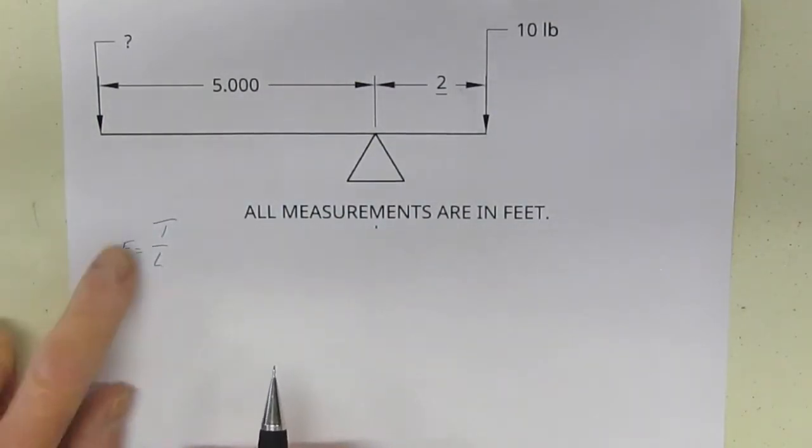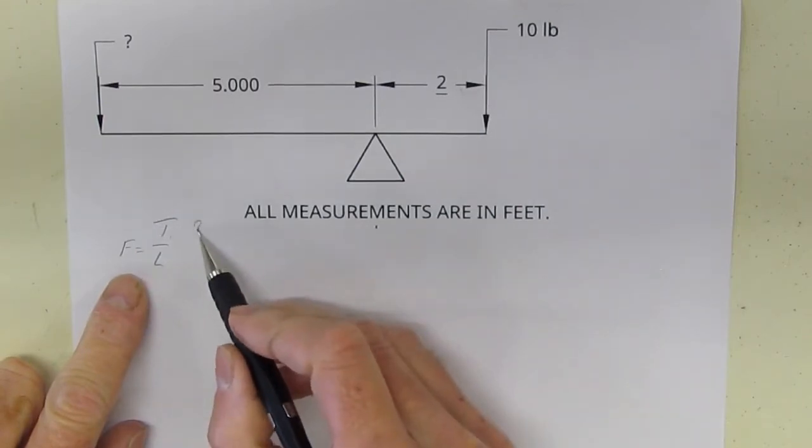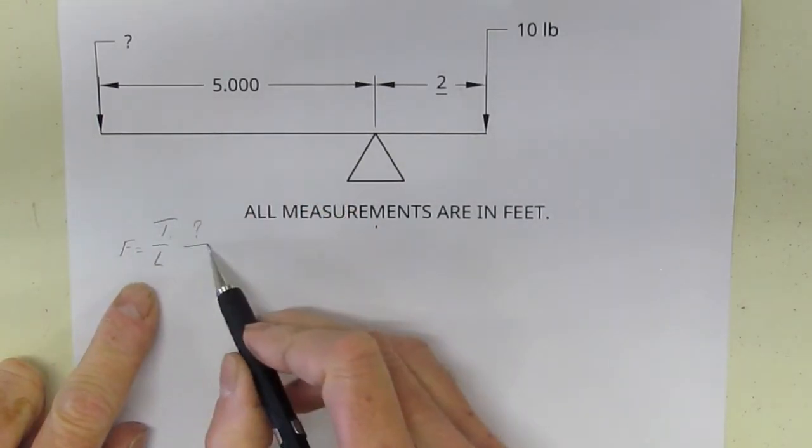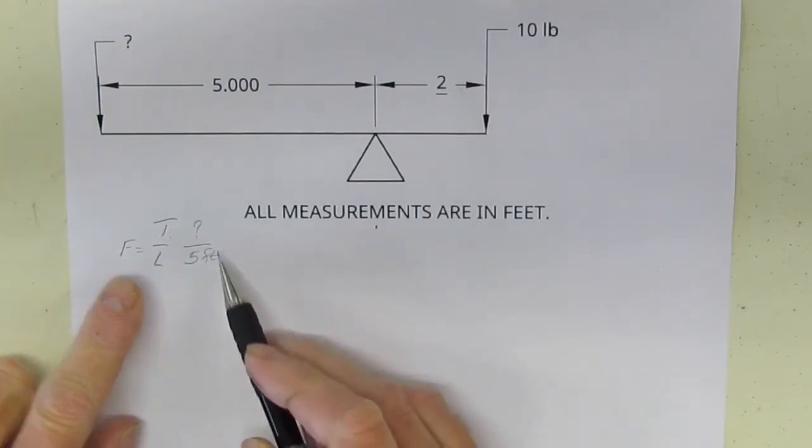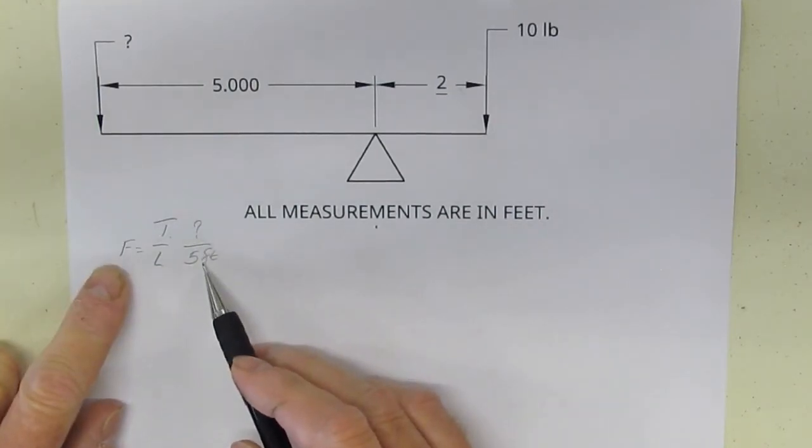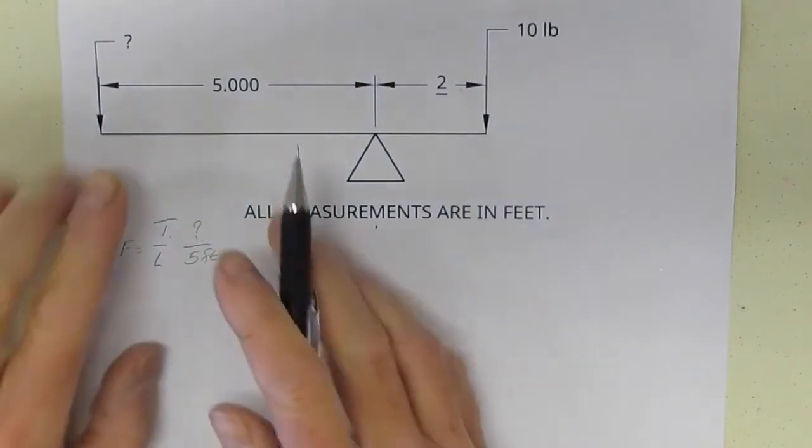We've gone over this before and we've done multiple questions to rearrange that formula. Now, if I take a look at this, I don't have torque—I have no idea what that is—but I have a length of five feet. Well, here's a problem: if I have two variables, I can't solve the problem.